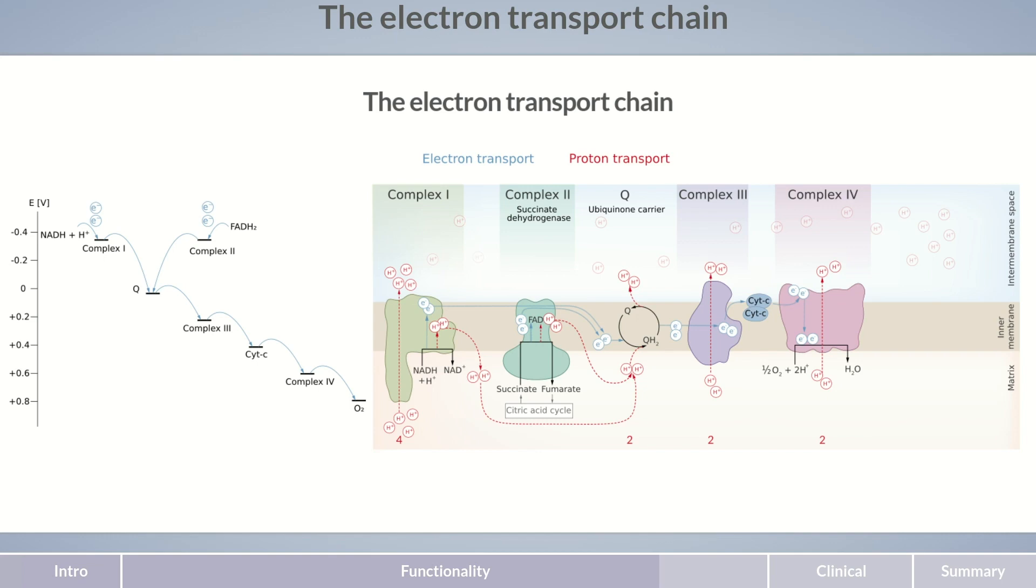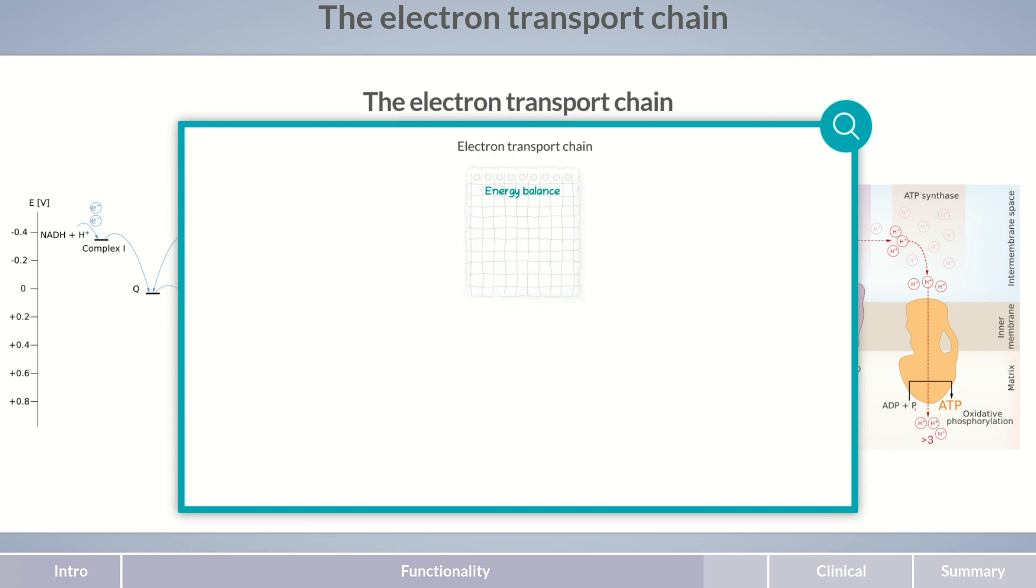ATP synthesis is carried out by a protein with an extraordinary mode of action, called ATP synthase. Here's a short overview of ATP production. ATP synthase transports protons along the gradient, back into the mitochondrial matrix. The energy set free by the transport of just over three protons is utilized to synthesize one molecule of ATP from ADP and phosphate. This reaction is known as oxidative phosphorylation. Through the interaction of the proteins in the respiratory chain and ATP synthase, one NADH and H+ provides around 2.5 molecules of ATP, while one FADH2 yields around 1.5 molecules of ATP.